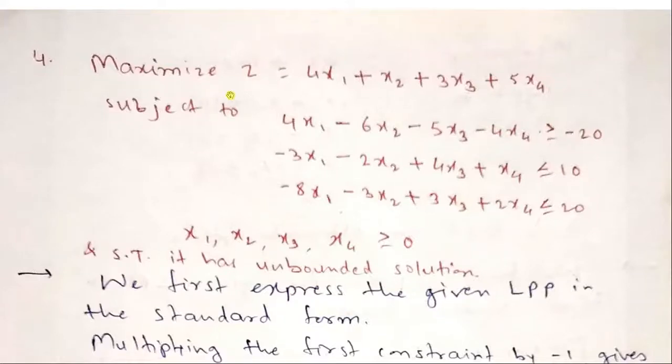I have to solve this example using simplex method and show that it has unbounded solution. There are two parts. The objective function is of maximization type. In the first constraint condition, the RHS is negative.